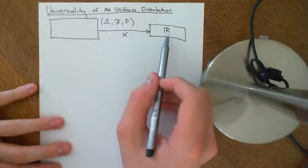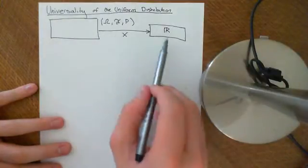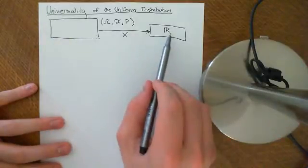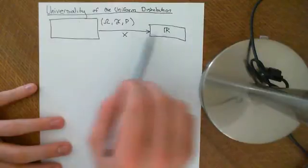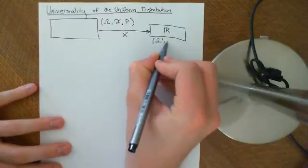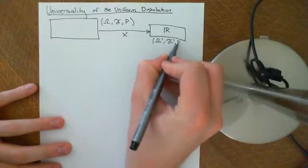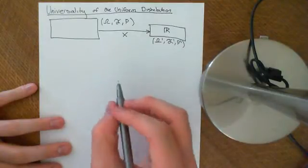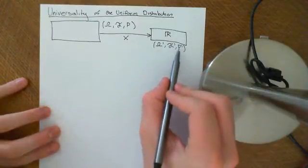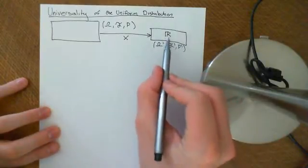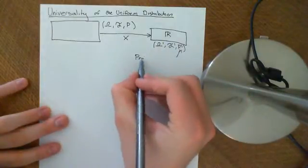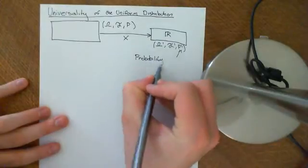So we want every single event here to have the corresponding event back in the original space — i.e., we want the preimage of any event here to be an event over there — and we want the probability of any event here to be the same as the probability of the preimage of that event under this probability measure. We'll call this the omega prime, f prime, and p prime coordinates probability space. The probability distribution is the name given to this probability measure on a probability space where the outcomes are in the real numbers.